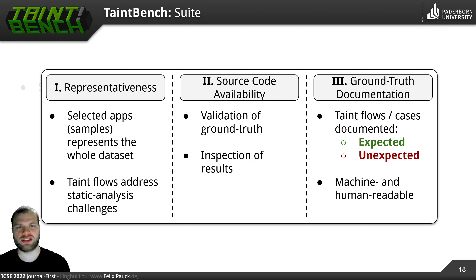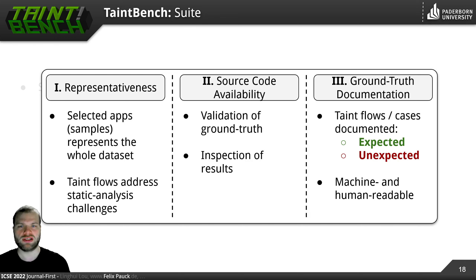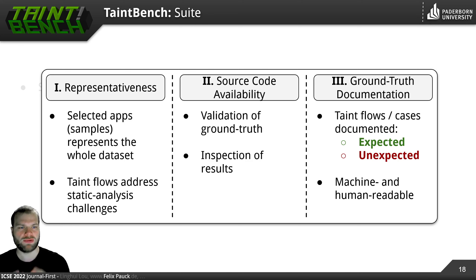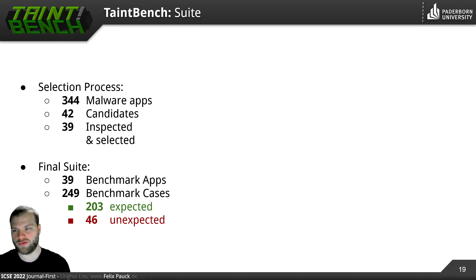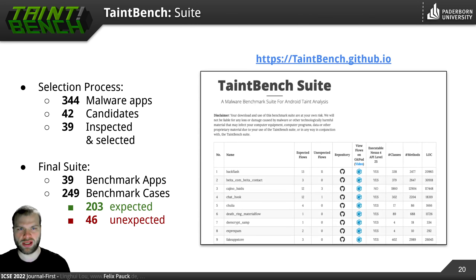The second criterion is source code availability. We have made sure that all the findings we have can be validated in the source code, so we can validate our ground truth. We used the source code to document the ground truth — for all 39 benchmark apps, we have explicitly documented expected and unexpected benchmark cases in a machine-readable and human-readable format. Our final suite comprises these 39 benchmark apps for which we documented more than 240 benchmark cases: 203 of them are expected and almost 50 are unexpected cases.